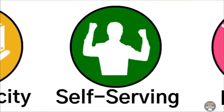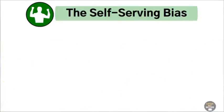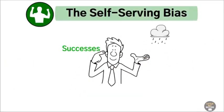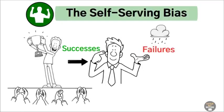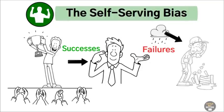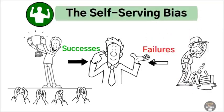The self-serving bias. The self-serving bias is when you credit yourself for successes but blame external factors for failures. Like thinking your win was all skill, but your loss was just bad luck. To avoid this, practice taking responsibility for your actions, both good and bad.